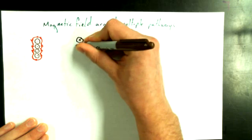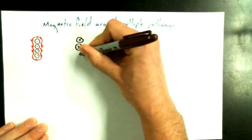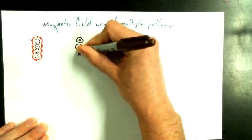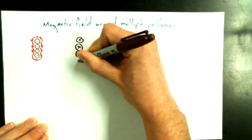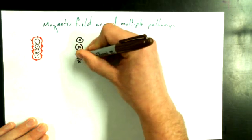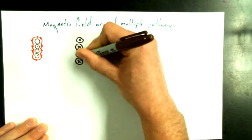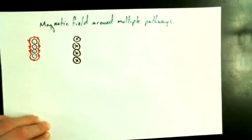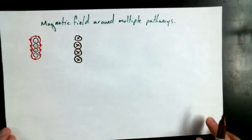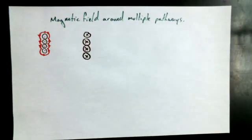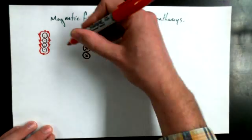Now if I take four more conductors and make them go into the page, what happens? It's going to be the same thing, but in the other direction.